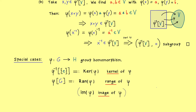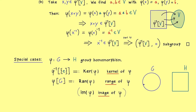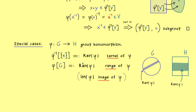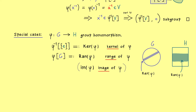Both subgroups can be visualized in the picture. We have G on the left and H on the right. The kernel of phi appears as a subgroup in G, and the range of phi appears on the right hand side in H. In future videos we will often consider subgroups that are given as the kernel of a homomorphism.